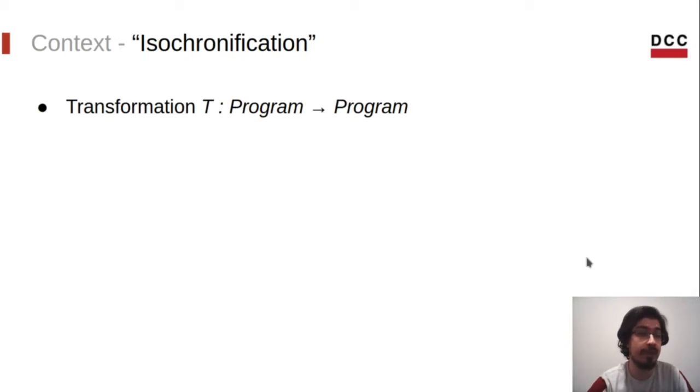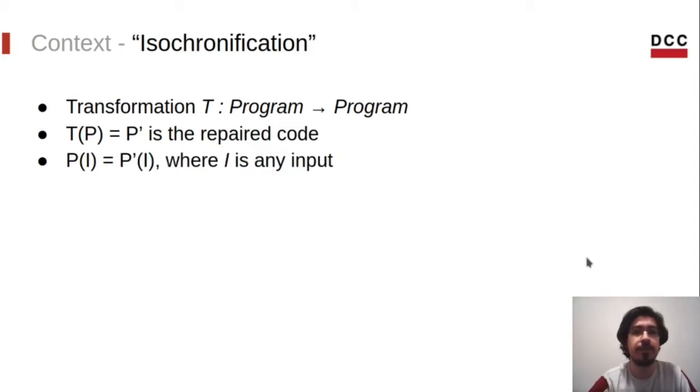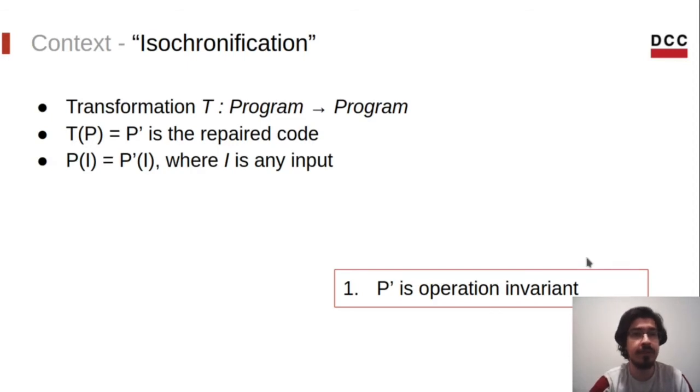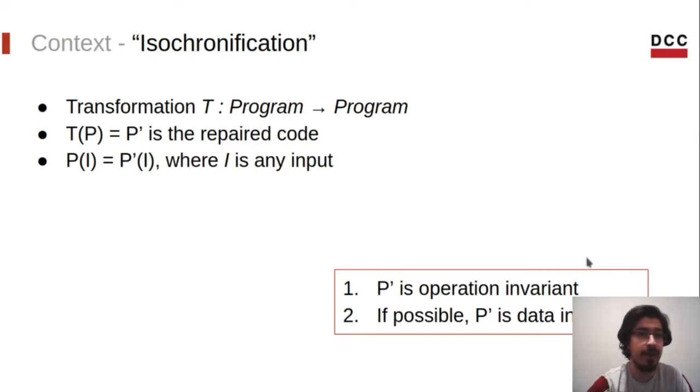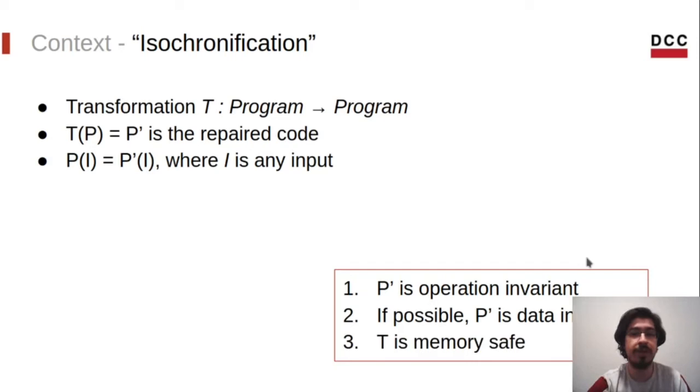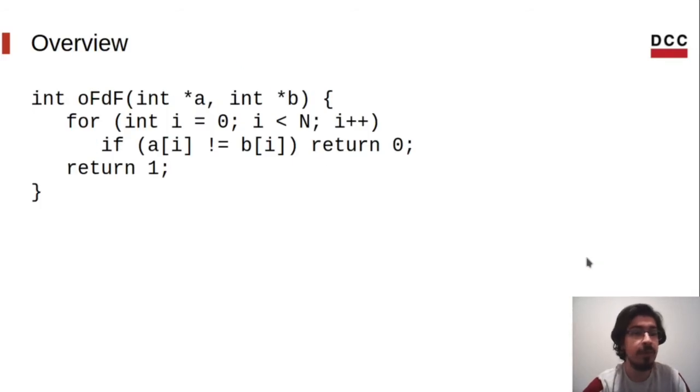For that, we will define transformation T. This transformation will take a program P and return a new version P' to eliminate the side channel identified on the original code. The result of the two functions must be the same for any input, so P and P' will be semantically equivalent. Furthermore, P' will always be operation invariant and data invariant whenever possible. Also, the transformation will be memory safe - by memory safe, we mean that it will not introduce any possible bug that could not occur in the original version.